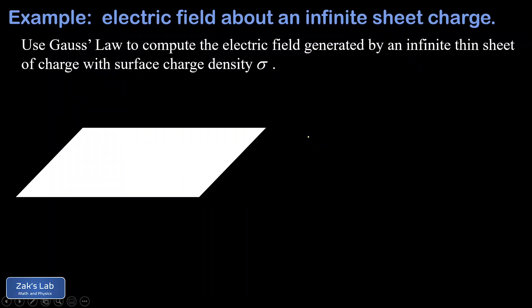In this video we're going to use Gauss's law to compute the electric field generated by an infinite thin sheet of charge with a surface charge density of sigma. Remember the units of area charge density are coulombs per square meter, so if you take that sigma and multiply by an area it will tell you the charge enclosed in that area.